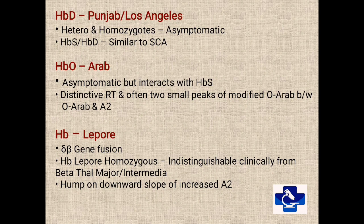Hemoglobin Lepore is a delta-beta fusion gene. Homozygous individuals are indistinguishable clinically from beta-thal major or intermediate, and it is identified by a hump on the downward slope of increased A2.